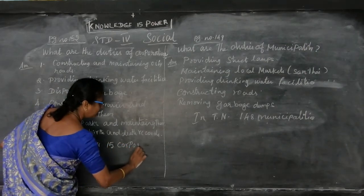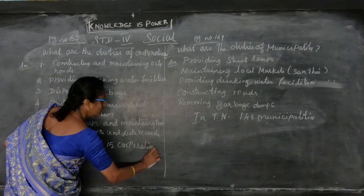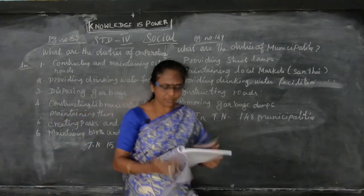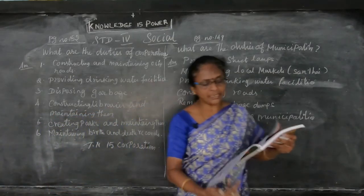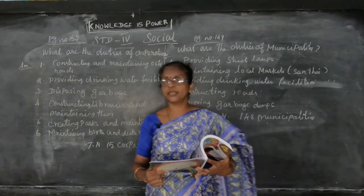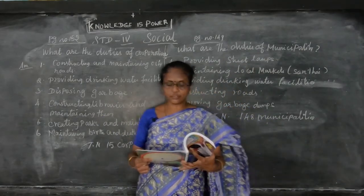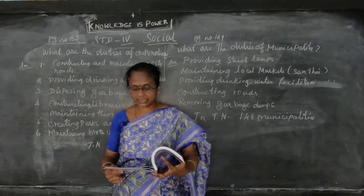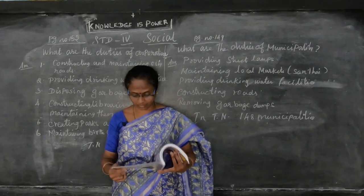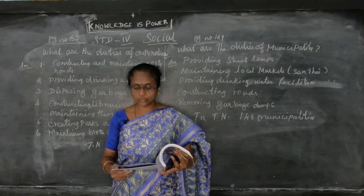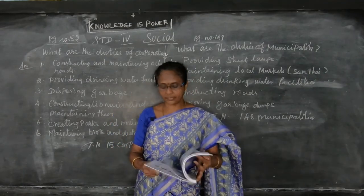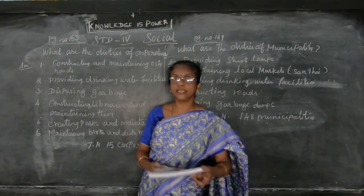Take the page number and learn, children. The head of the municipality is called the Chairperson, who is elected by the members of the municipality, and the term of office is 5 years. Go through this lesson on municipality and corporation. Thank you, children.